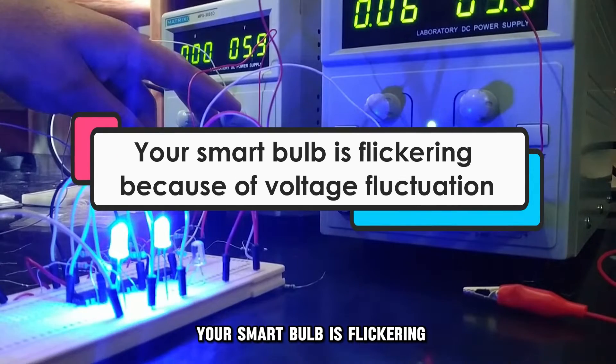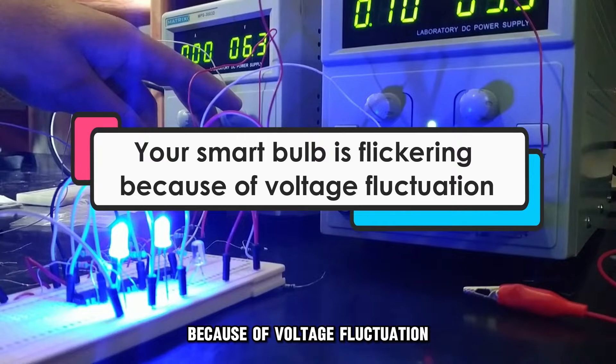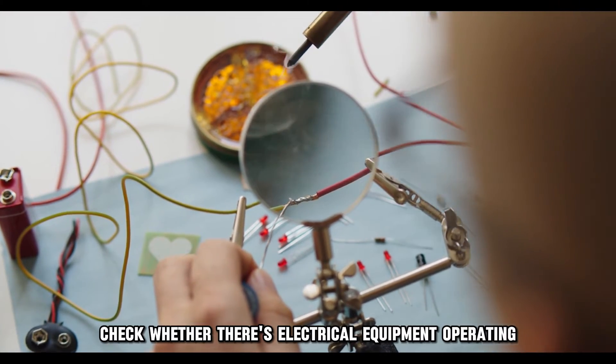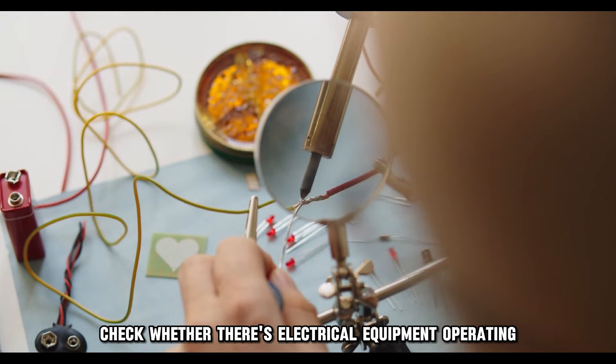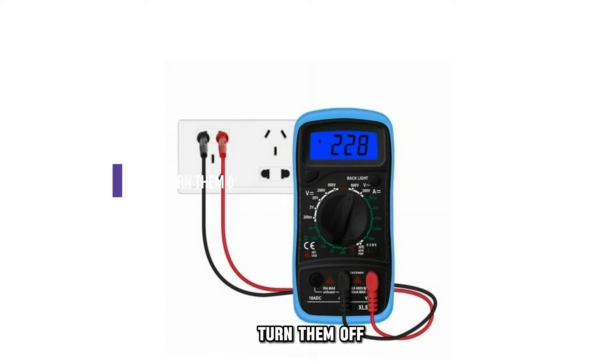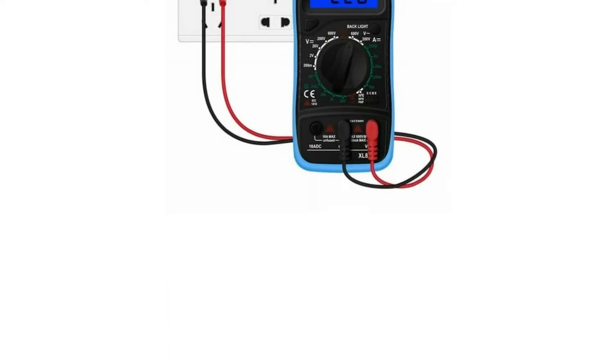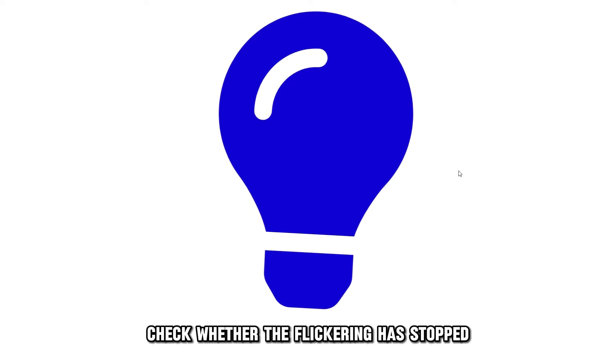Your smart bulb is flickering because of voltage fluctuation. Here's how to solve the issue. Check whether there's electrical equipment operating at the same time. Turn them off or move them to a 240-volt circuit. Check whether the flickering has stopped.